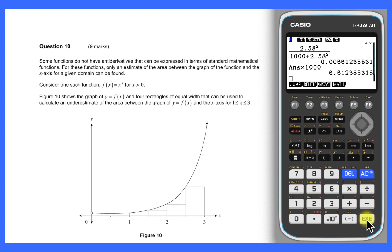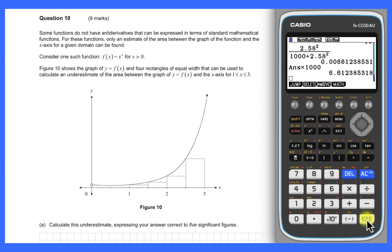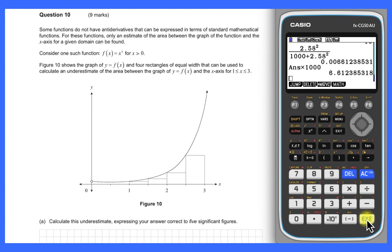Okay, question 10. This question looks at a function x to the x, which is an unusual one, certainly not taught in the course. But the methods we're going to use here initially are all about over and under estimates to find some approximation for the area under the curve. So whilst we don't need to be able to integrate it, we just need to work with the function, substitutions they've drawn, the estimates.